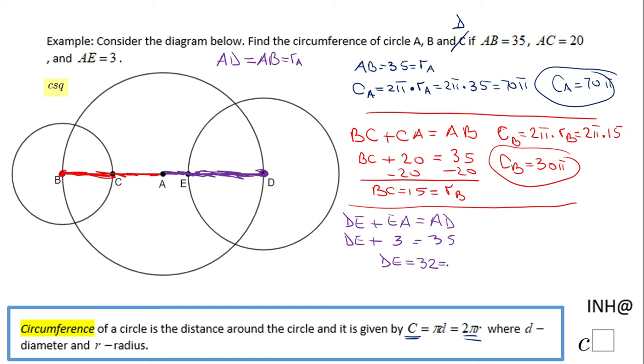This is the radius of circle D. For finding the circumference of circle D, we're going to use the same formula, 2π times the radius.